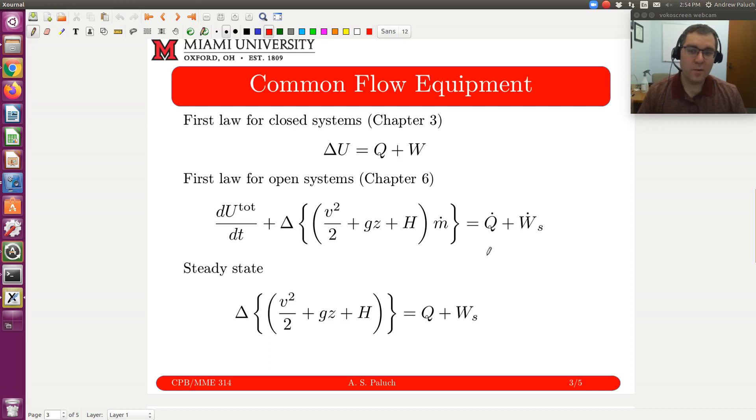For a steady state process, accumulation term is going to go to zero, and we'll assume we don't have a chemical reaction or anything else going on. If our mass flow rate is constant, we end up with just our term here, delta, change in kinetic, potential, and then enthalpy, and on the right-hand side, Q plus Ws corresponding to my shaft work. If we further assume that the change in kinetic energy and potential energy is negligible, these two terms would go away, and we would just be left with delta H equals Q plus Ws.